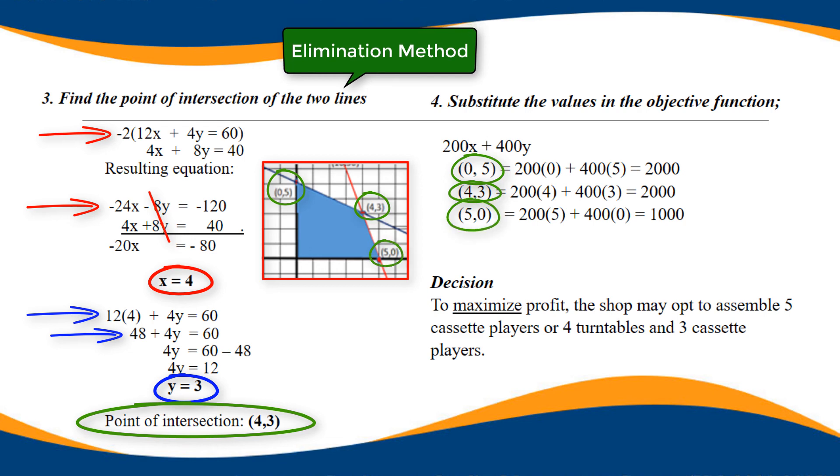Substitute the values in the objective function. The objective is 200X plus 400Y, where 200 is the profit per turntable and 400 per cassette player. Substitute the three vertices. For 0, 5: 200 times 0 plus 400 times 5 equals 2000. For 4, 3: 200 times 4 plus 400 times 3 equals 2000 also. For 5, 0: 200 times 5 plus 400 times 0 equals 1000.